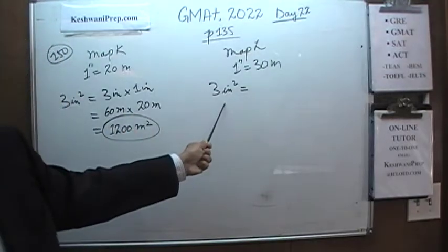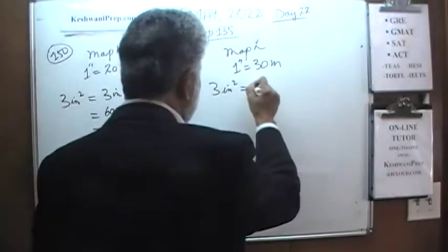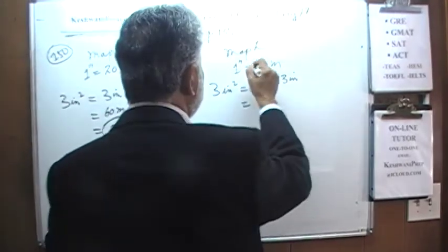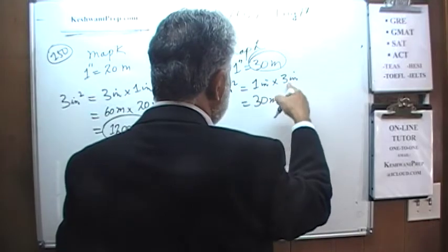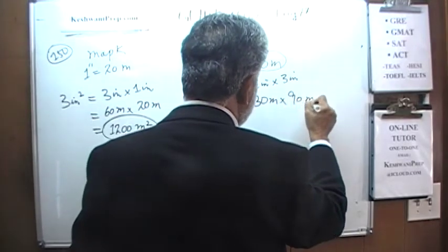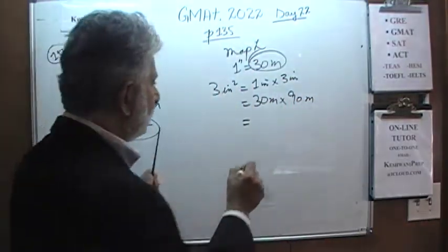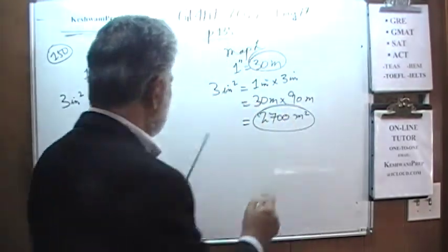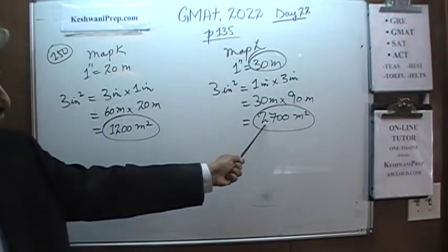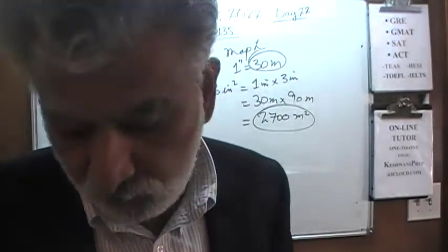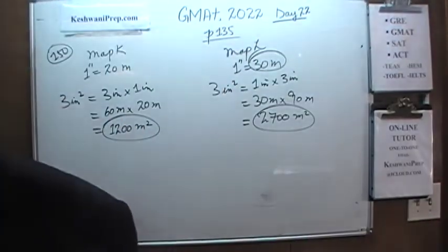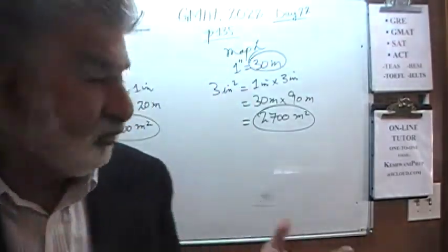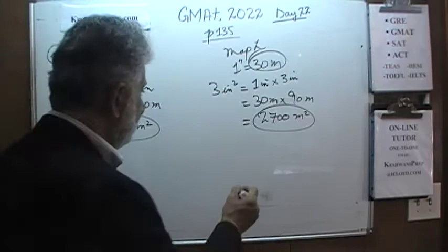Let's see what 3 square inches represents on map L. 3 square inches is 1 inch times 3 inches. On map L, 1 inch is 30 meters, and 3 inches would be 90 meters. So the area is 30 times 90 equals 2,700 square meters. The answer is simply 2,700 minus 1,200 equals 1,500 square meters more. The map area of 3 square inches represents 1,500 more square meters on map L than on map K. The answer is E.